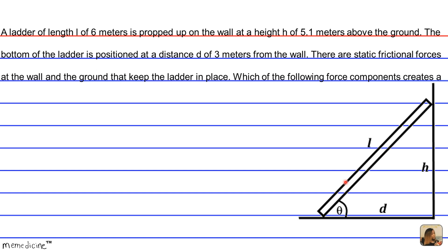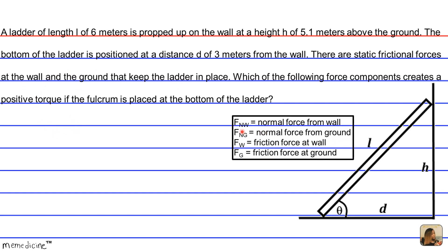Which of the following force components creates a positive torque? So a positive torque would be counterclockwise if the fulcrum is placed right here at the bottom of the ladder. And for those who don't know, a fulcrum is just the axis or point of rotation, sort of like an elbow joint. And torque is a twisting force or a rotational force.